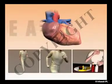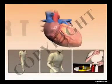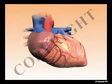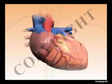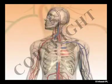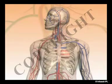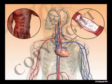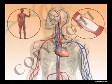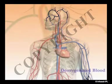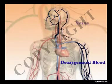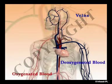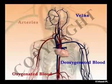Our heart tirelessly works for us throughout our lifetime, always at our service. It is a continuously working pump which generates pressure to push and distribute blood to all the tissues of the body through blood vessels. It receives deoxygenated blood for purification from the veins and pumps out oxygenated blood for tissue metabolism through the arteries.